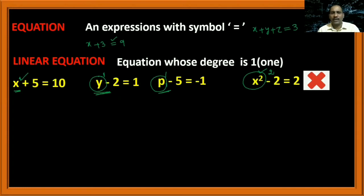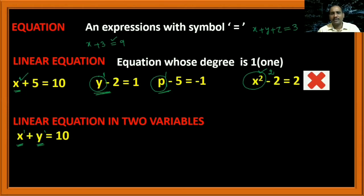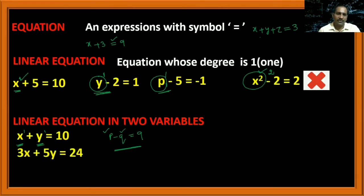If we have two variables in the equation, then they are called linear equations in two variables. For example, x plus y equal to 10 — the degree of these two terms is 1, so it is a linear equation, and we have two variables x and y, so it is called a linear equation in two variables. Similarly, p minus q equal to 9 is also a linear equation in two variables p and q. And 3x plus 5y equal to 24 also has two variables x and y — so these are linear equations in two variables.